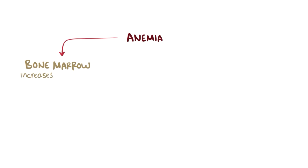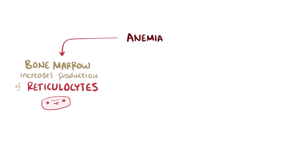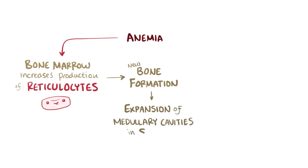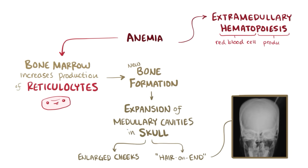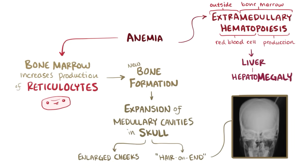To counteract the anemia of sickle cell disease, the bone marrow makes increased numbers of reticulocytes, which are immature red blood cells. This ends up causing new bone formation, and the medullary cavities of the skull can expand outward, which causes enlarged cheeks and a hair-on-end appearance on skull x-ray. Extramedullary hematopoiesis, which is red blood cell production outside of the bone marrow, can also happen, most often in the liver, which can cause hepatomegaly.